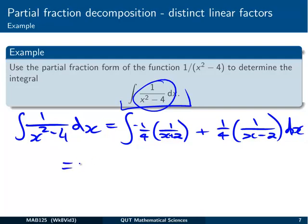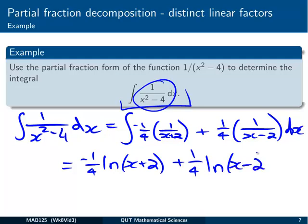And then we can integrate these. So that's going to be -1/4 as a constant multiple. 1/(x+2) integrates to give me ln(x+2), plus 1/4 is a constant multiple, and ln(x-2).